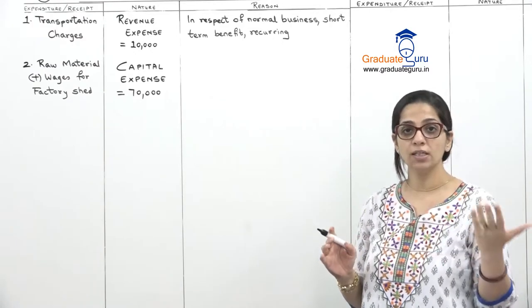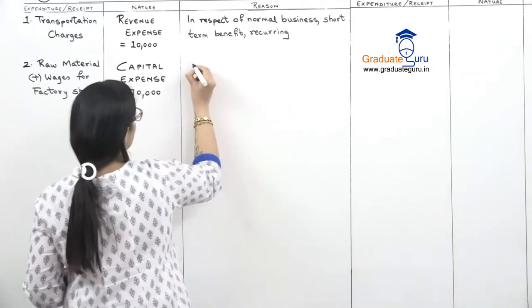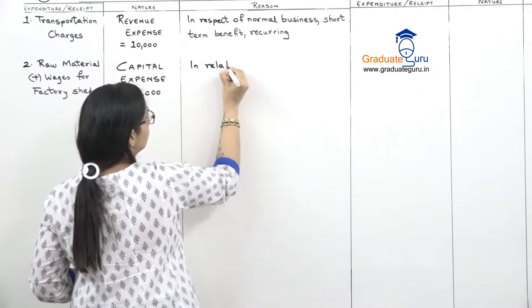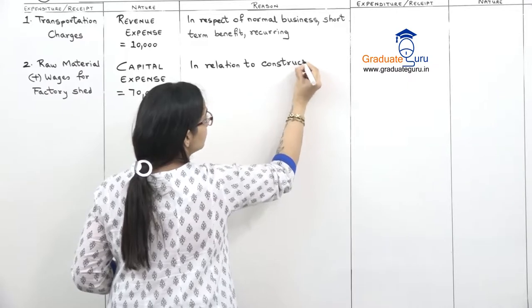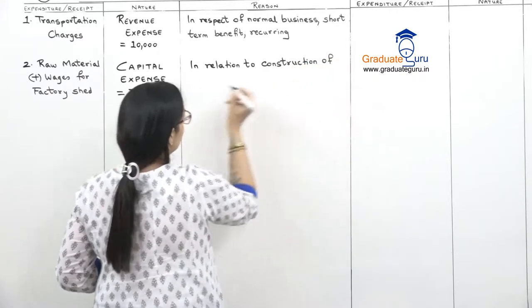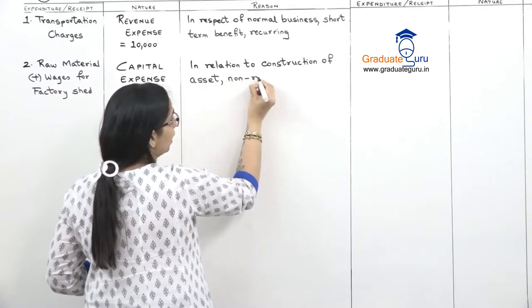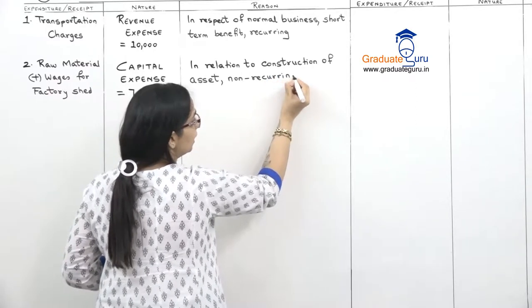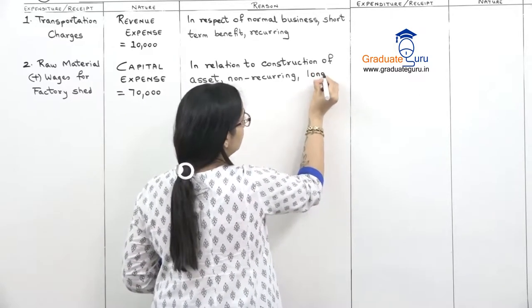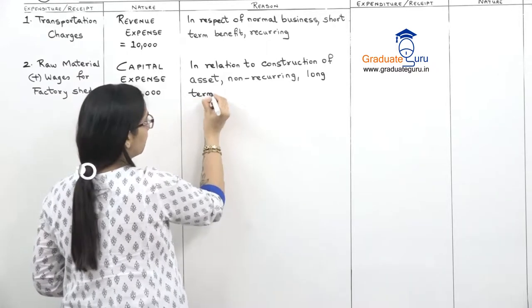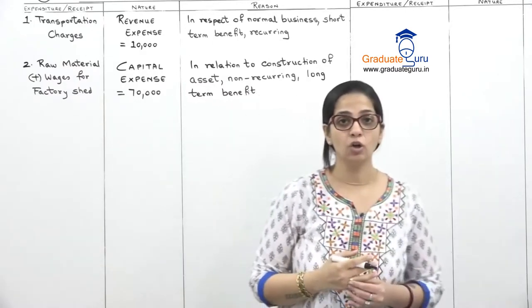Don't get confused thinking it is revenue just because you see raw material and wages — because it is in connection with an asset, it is capital. The reason: it is in relation to construction of an asset; I am constructing a new asset. It is non-recurring — we will not construct the same asset again and again — and it has a long-term benefit.